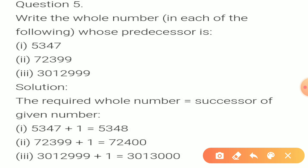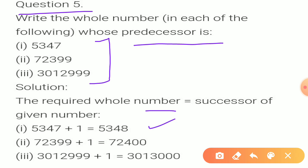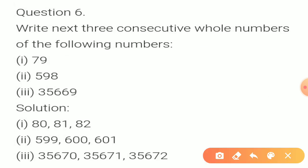Now question 5: Write the whole number whose predecessor is given. If you have to write the whole number, it will be the predecessor of the given number. If you have to write the whole number, the predecessor of the given number will be the successor of the given number.